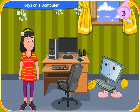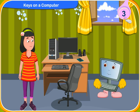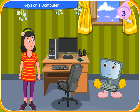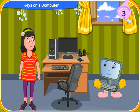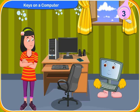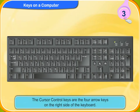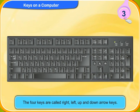Correct. You have a very good memory, Rini. Now, which are the cursor control keys? Let me remind you. These four arrow keys on the right side of the keyboard are called cursor control keys. The four keys are called right, left, up and down arrow keys.